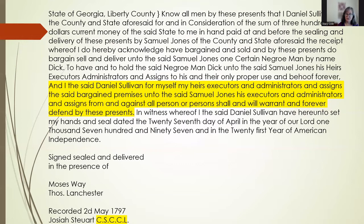Also, they often write out the year and specify which year it is after independence, which is really helpful because written numerals can look very similar if written quickly. Then at the bottom, again, you'll see the abbreviation we discussed — for the court official. In this case, CSCCL stands for Clerk, Superior Court, County of Liberty — or you might see it as CSCLC. It's worth looking at the abbreviations because sometimes they'll record a deed from another county and your eye may skip over that at the beginning, and you'll just notice that the abbreviation is different. I've included a list of these abbreviations for Liberty County in your handout.